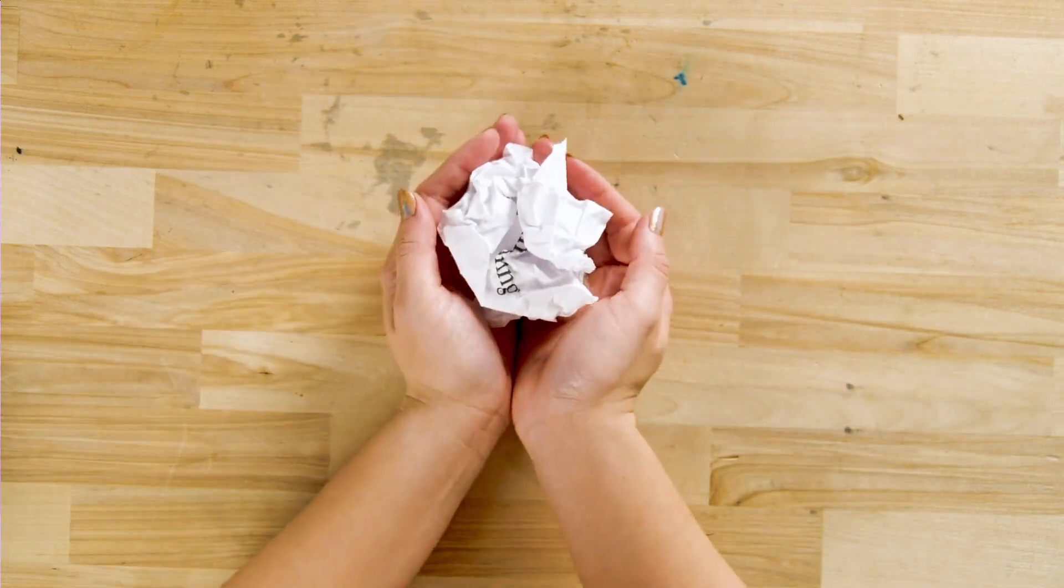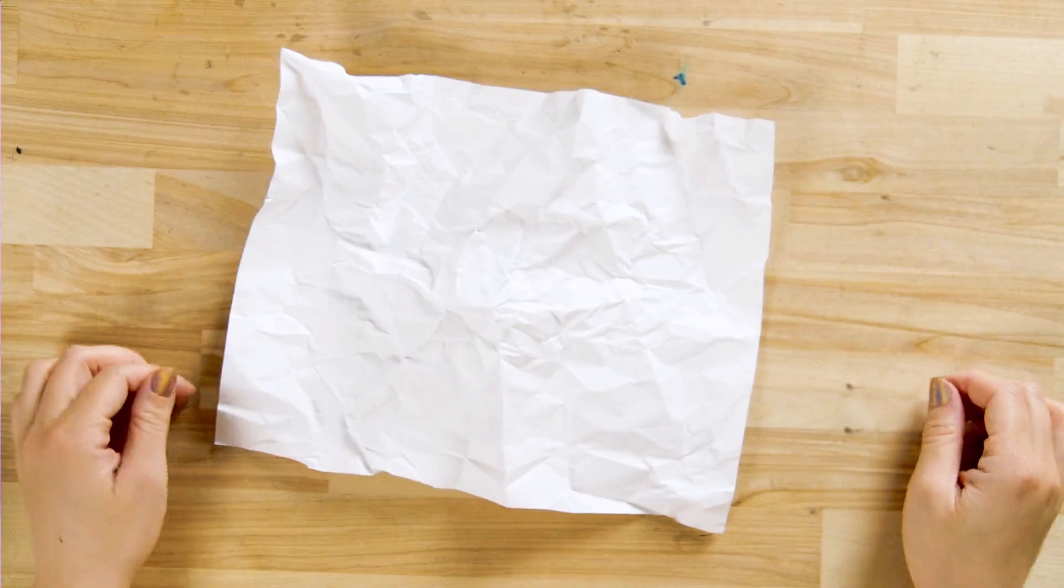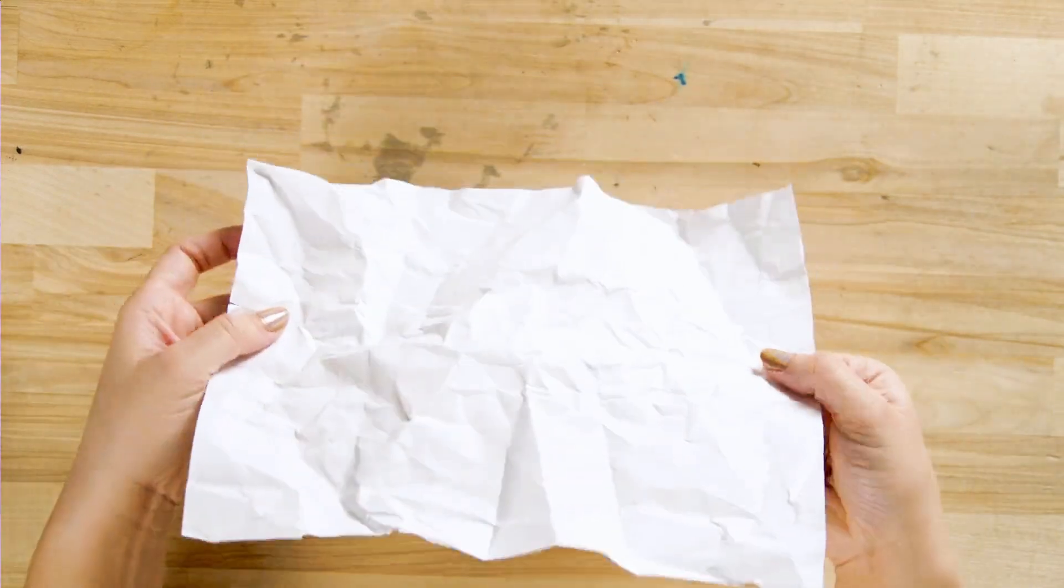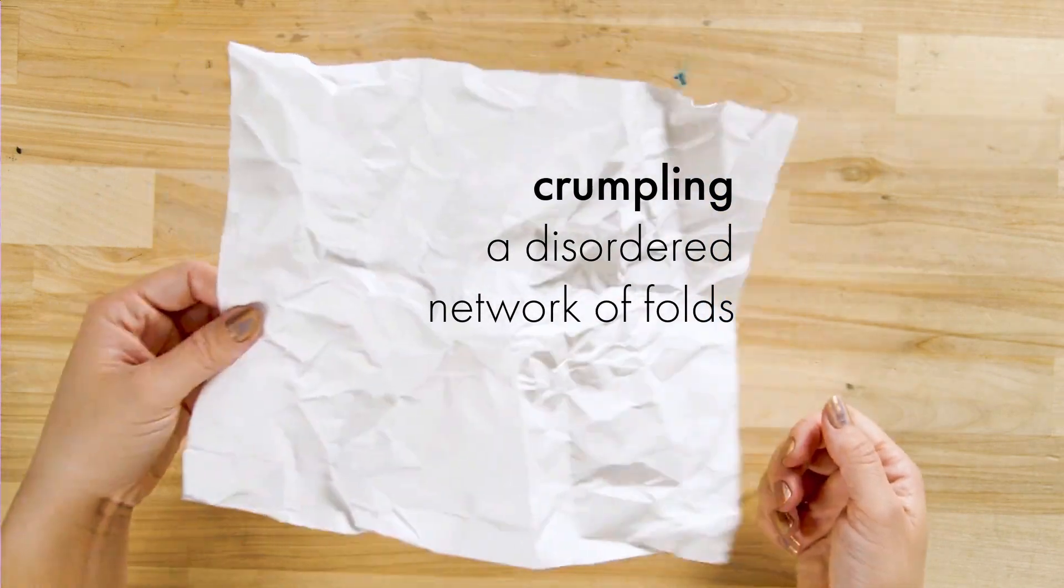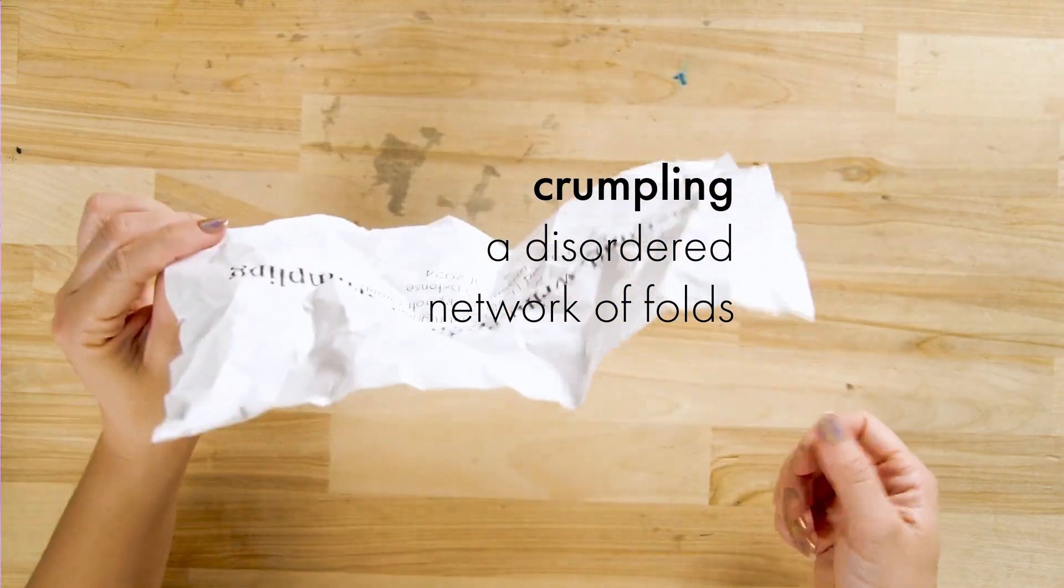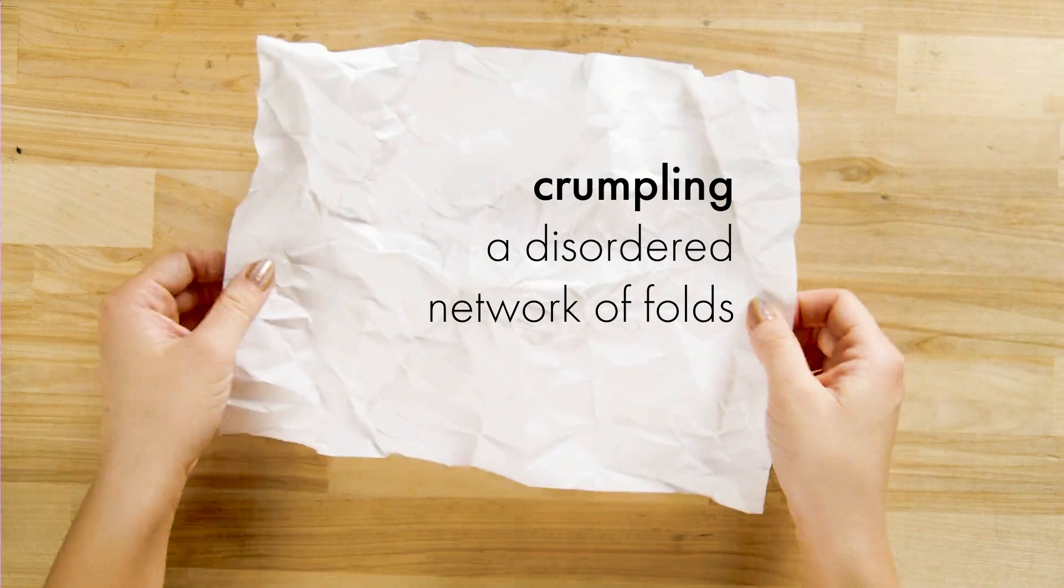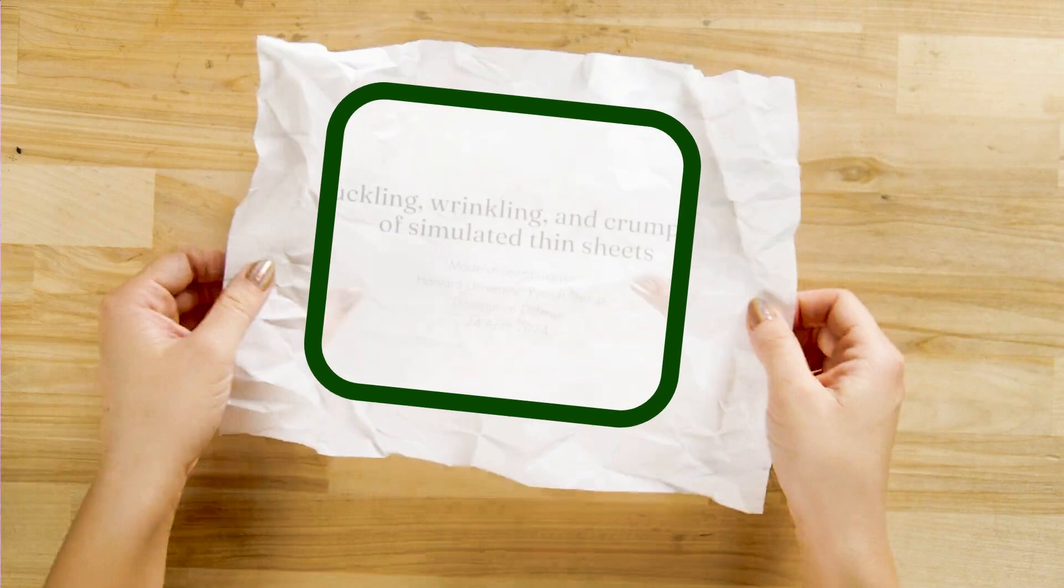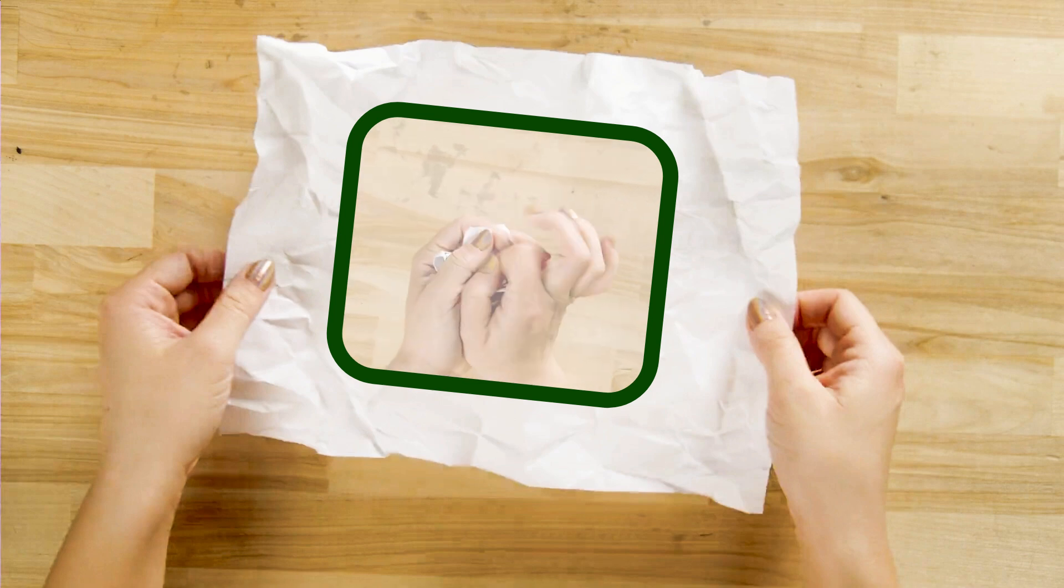Finally, we have crumpling. Of the three, this might be the most familiar to most of us. By crumpling, I'm specifically referring to this disordered network of folds. These mountains and valleys have formed to dissipate energy in a highly compressed system. In this case, I compressed the paper in my hands.